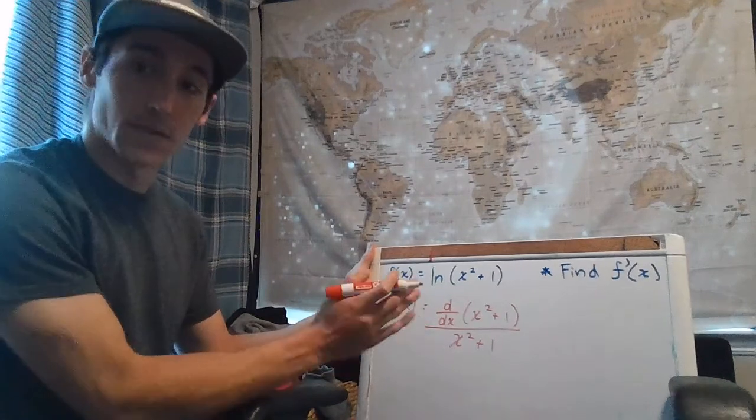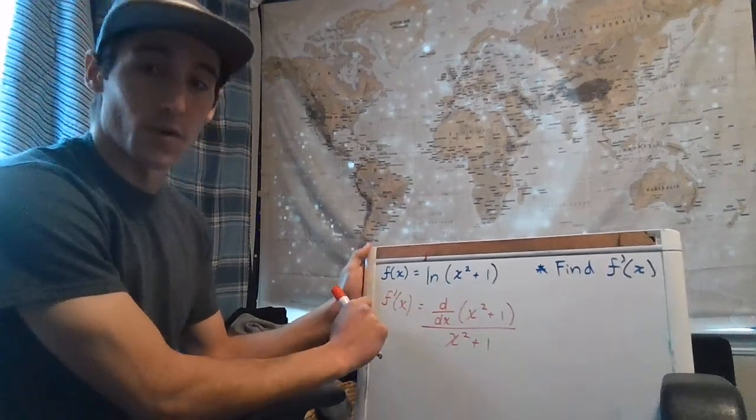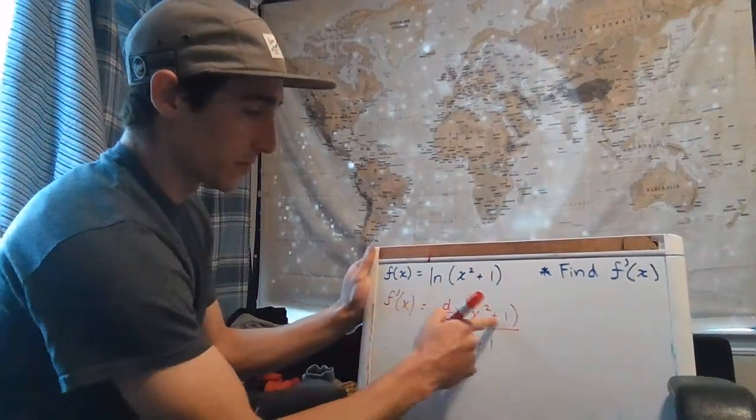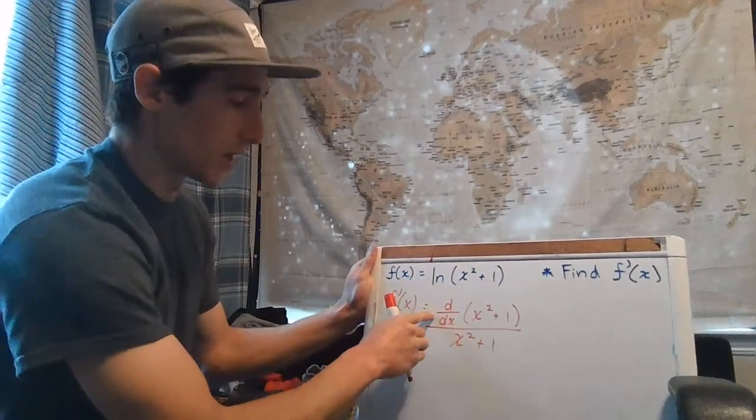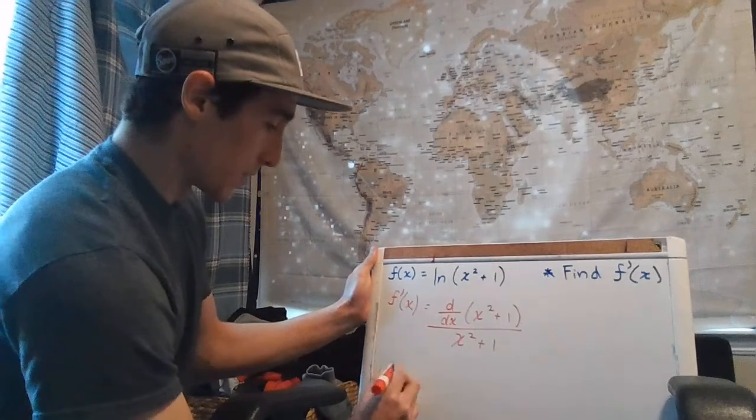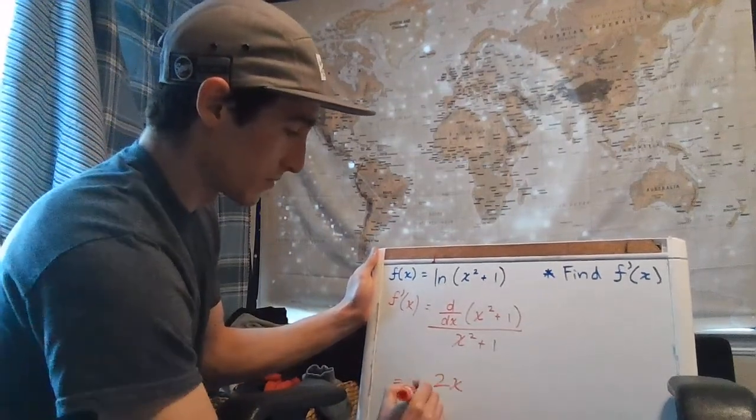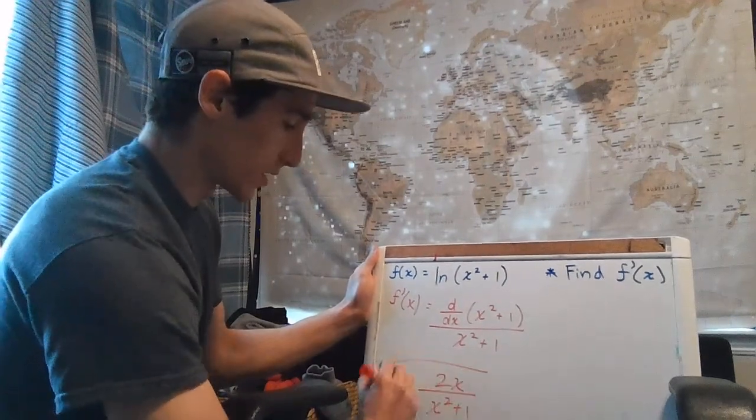So here we go. And now, it should be relatively straightforward. What's the derivative of x squared plus 1? We can distribute this through. The derivative of x squared is 2x—just use power rule. And the derivative of 1, or any constant, is 0. So our final answer here is going to be 2x divided by x squared plus 1.